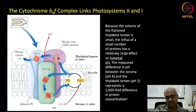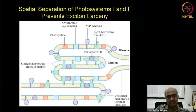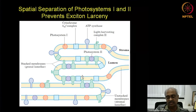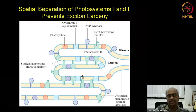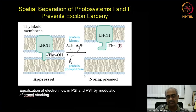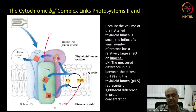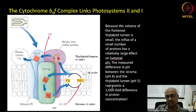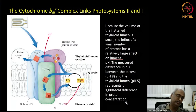The thylakoid lumen space is extremely narrow compared to the stromal side. When protons are pumped into it by this complex, the pH gradient is about a thousandfold. The proton concentration inside the thylakoid lumen is very high — pH 5 — while outside in the stroma it is pH 8. This thousandfold difference in proton concentration is sufficient for ATP synthesis.